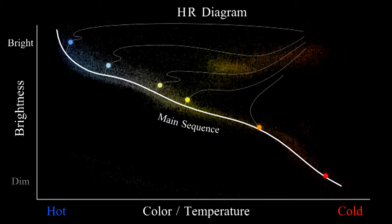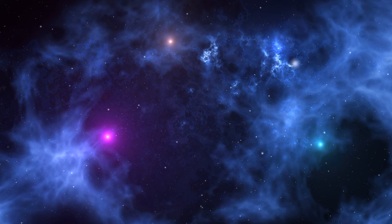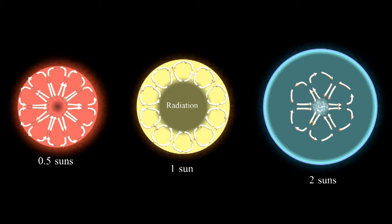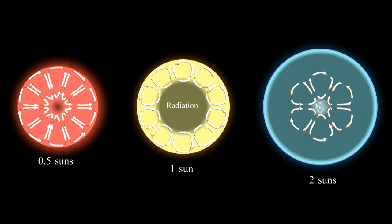The most important thing determining how a star develops is the star's mass. Mass is so important because mass produces gravity.